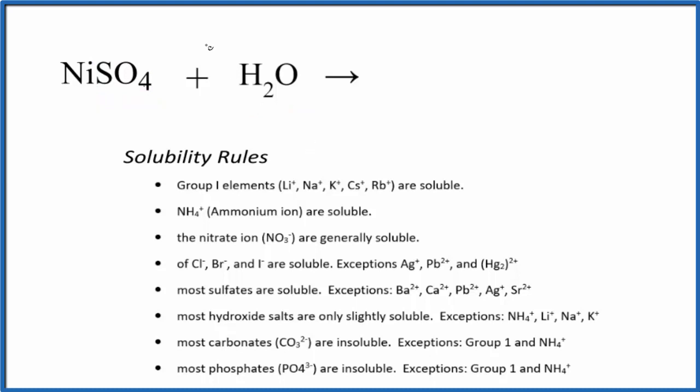So we'll take solid nickel-2-sulfate, put a little S here for solid, and put it in liquid water, and we want to know what happens. So nickel is a metal, and this sulfate ion, that's a group of non-metals. So this is an ionic compound.